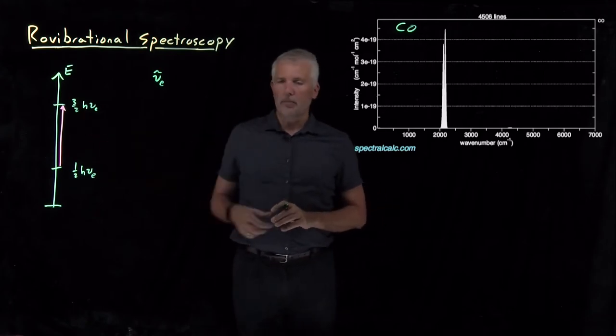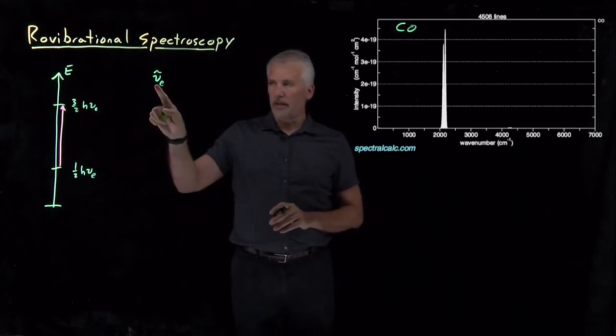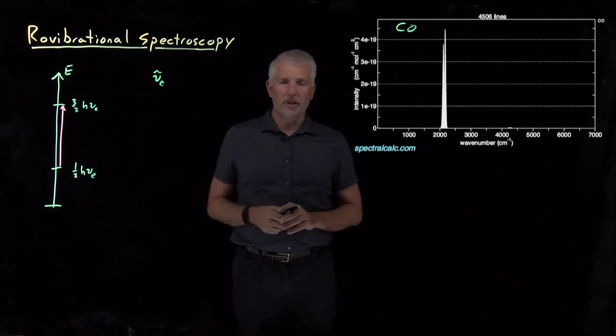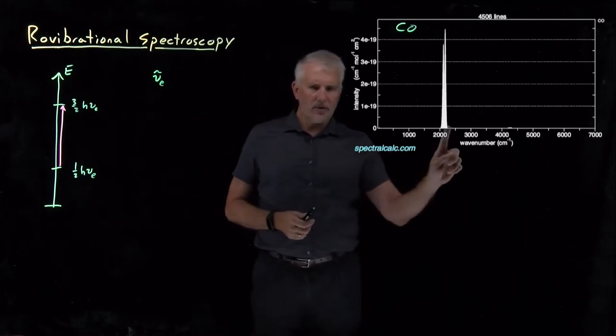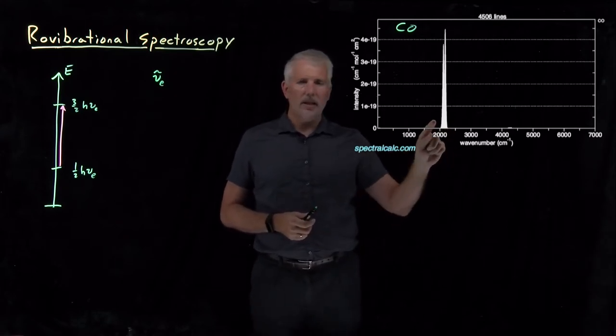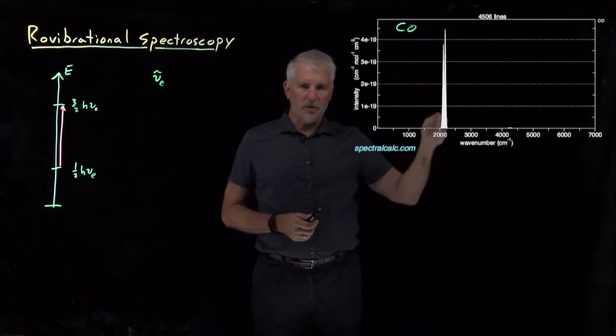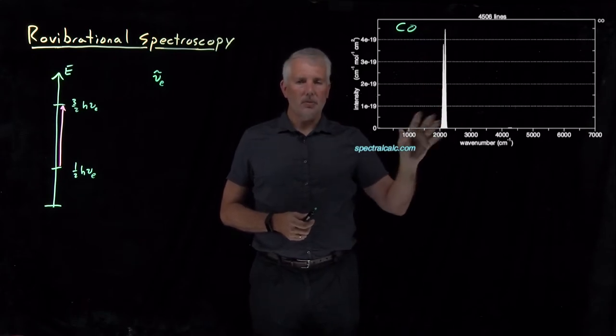So the harmonic oscillator model predicts that light will be absorbed at wave numbers of 2170 inverse centimeters, and that's roughly what we see here, but you can see that it's not just absorption at this specific frequency, but it's a little more complicated than that.